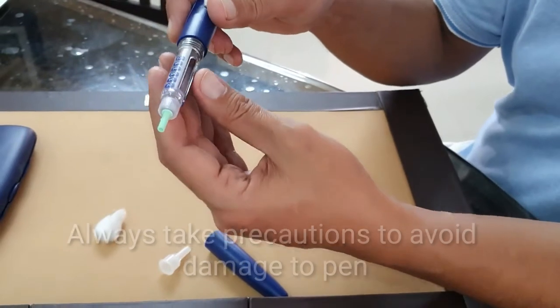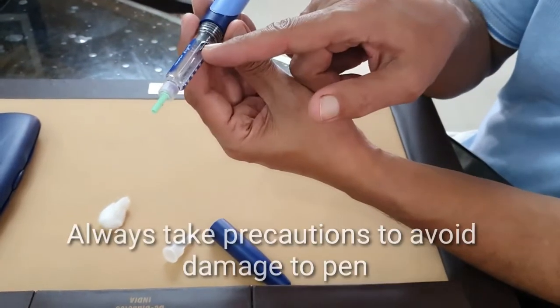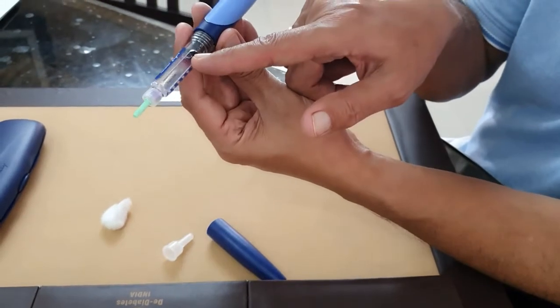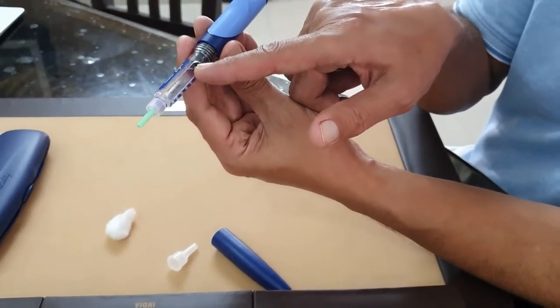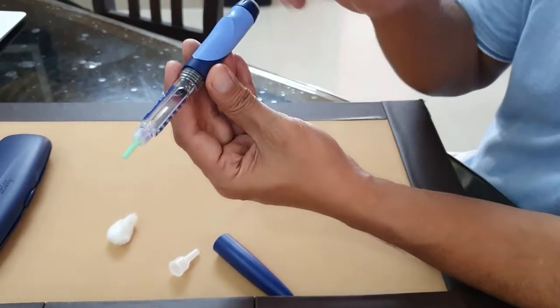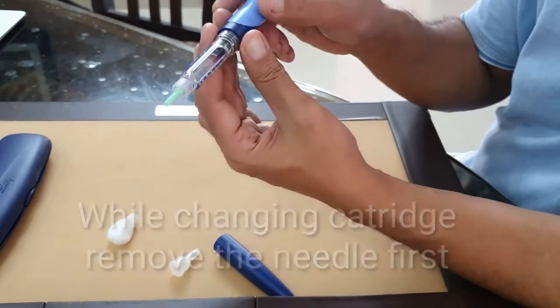Don't let it fall - if it falls down it can break and you may not get the actual measure of insulin while injecting. Once the insulin is reducing, the cartridge quantity reduces. You can see a black rubber piston which moves towards the end.